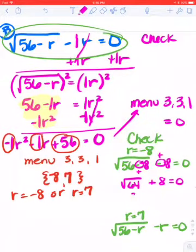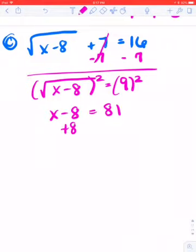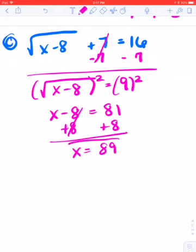Okay, now on this one, I don't have two x's. I, at this point, don't have a negative number equaling my square root. So nothing that would lead me to believe that I need to check my answer. So I'm going to start by getting the square root by itself. So I'm going to subtract 7 from both sides. Once the radical is by itself, I'm going to square both sides. And then to get x by itself, I would just have to add 8. So my answer is 89.